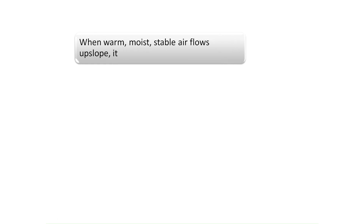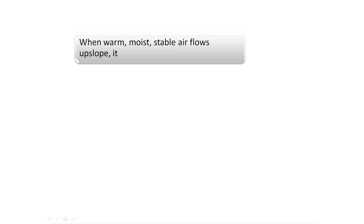When warm, moist, stable air flows upslope, the key word in this question is stable. Stratus clouds are an indication of stable air while cumulonimbus clouds are typically an indication of turbulent conditions. We can eliminate answers B and C since thunderstorms and convective turbulence are associated with cumulonimbus clouds, and stable, calm conditions can be found near stratus clouds.